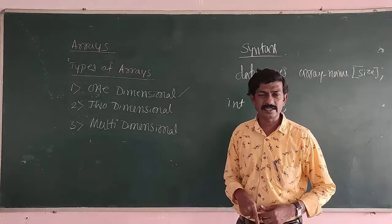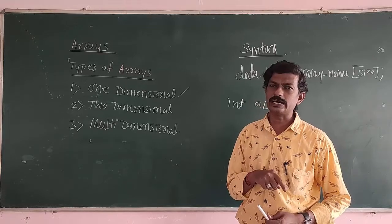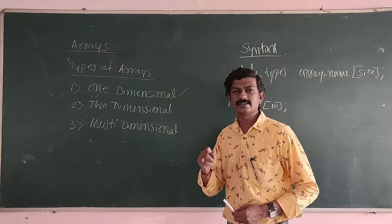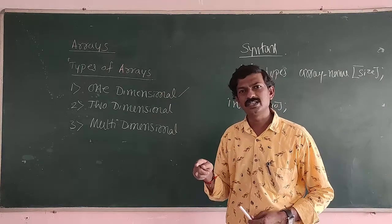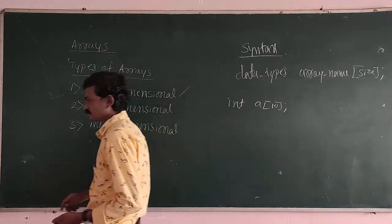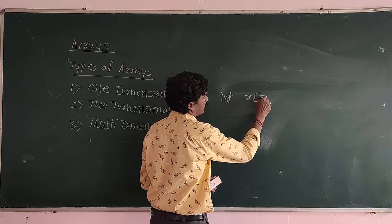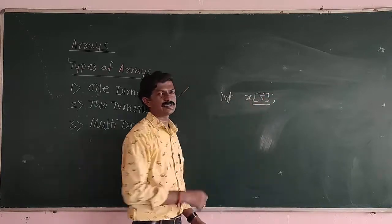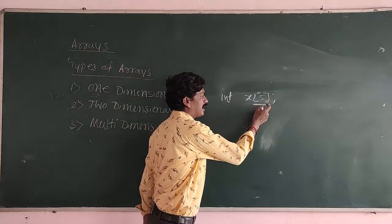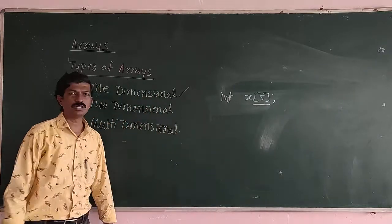The first one is one-dimensional Arrays. One-dimensional Arrays are those which are having only one subscript. These are allowed to store elements either in the form of a row or column. For example, integer x of 5. Here, 5 is the subscript, which is able to store five elements either in the form of rows or columns. Such type of Arrays are called one-dimensional Arrays.